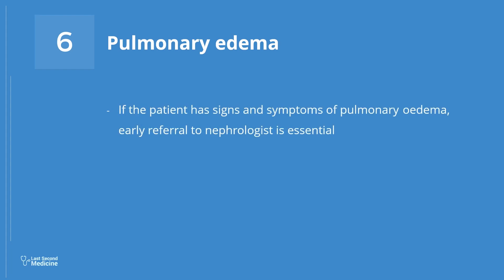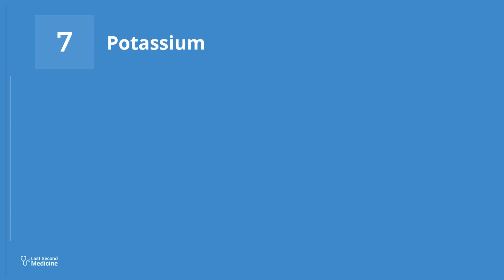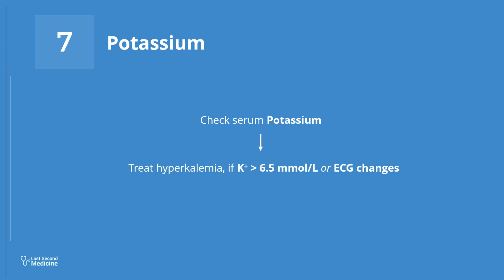Number 6: Pulmonary Edema in AKI. If the patient with AKI has signs and symptoms of pulmonary edema, early referral to a nephrologist is essential for possible urgent hemodialysis. Number 7: Potassium Levels in AKI. Hyperkalemia is a risk in renal failure. Check potassium levels of the patient urgently. Treat hyperkalemia if potassium level is more than 6.5 millimole per liter, or if there are ECG changes consistent with hyperkalemia.